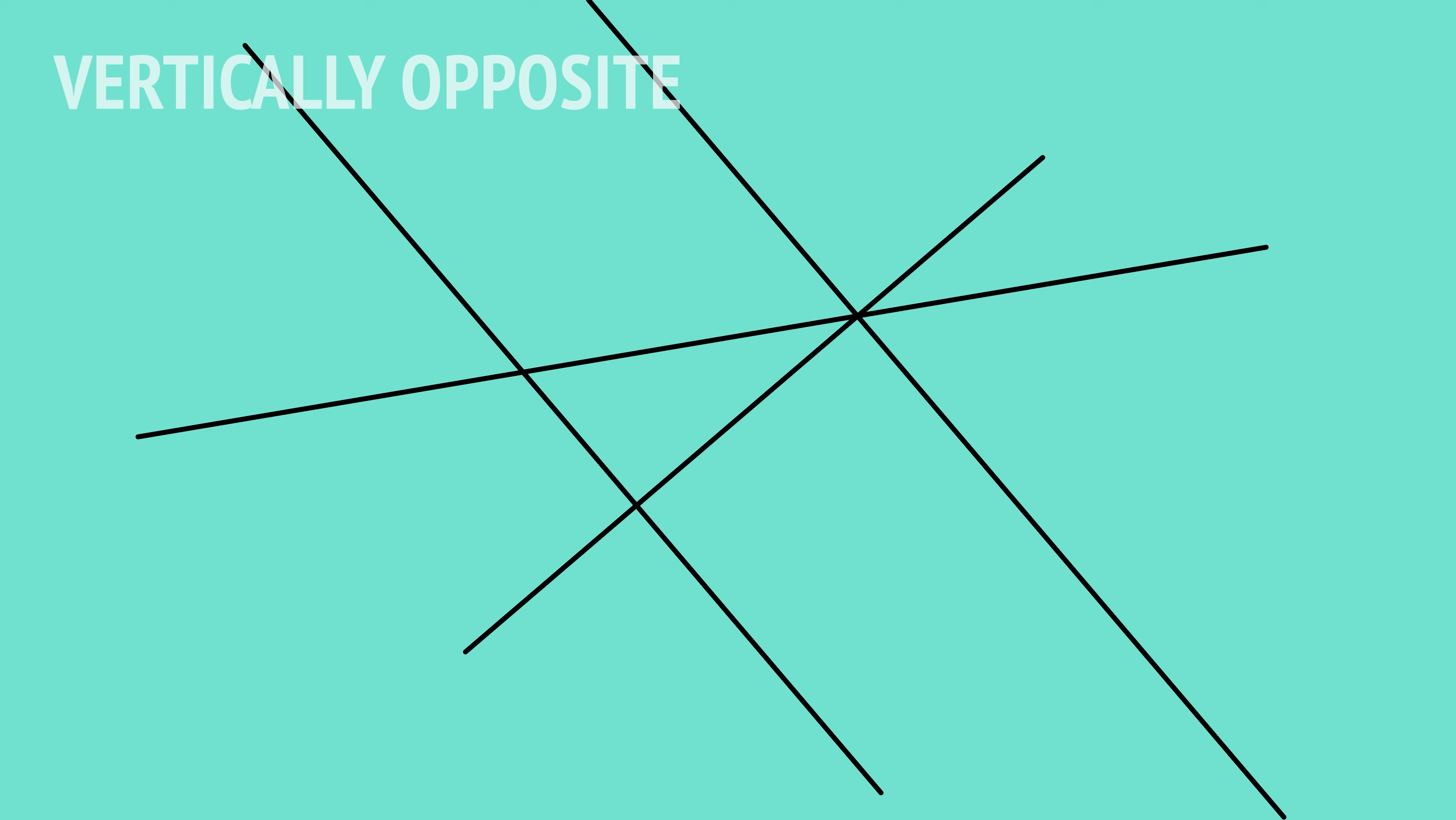Given a number of intersecting lines, we'll be able to identify pairs of vertically opposite angles, and we'll know that each pair is equal.